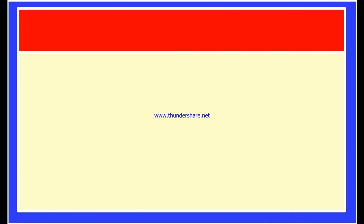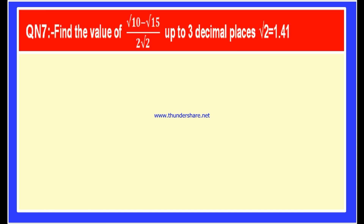Here is exercise 1.4 and this is question number 7. Find the value of root 10 minus root 15 whole divided by 2 root 2, up to 3 decimal places. It is given that root 2 value is 1.414 and root 5 value is 2.236.